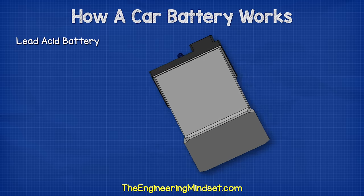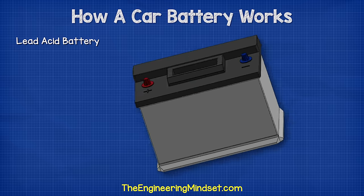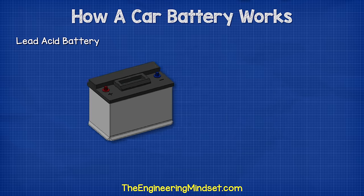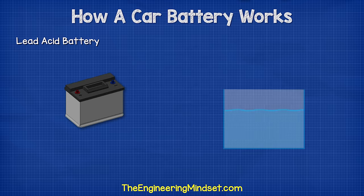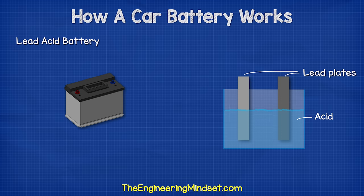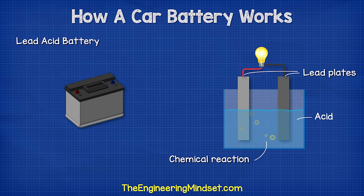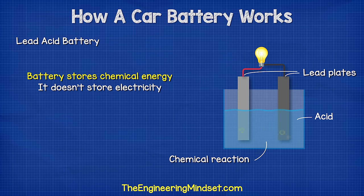This is a lead acid battery. We call it a lead acid battery because inside the unit are lead plates which are submerged into an acid. This creates a chemical reaction which releases energy and provides us with a voltage and current. The battery is therefore storing energy in the form of chemical energy — it does not store electricity.